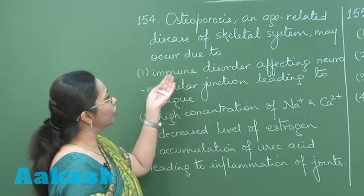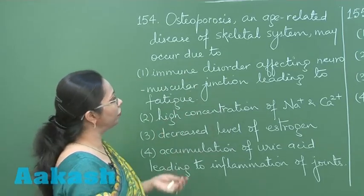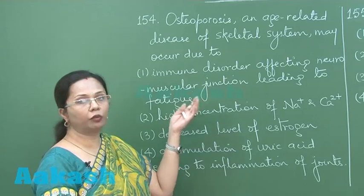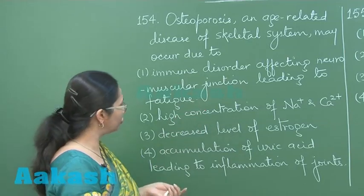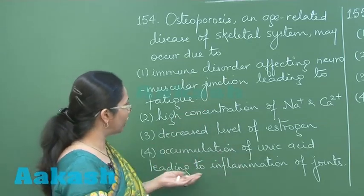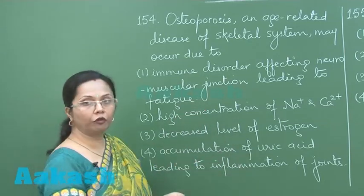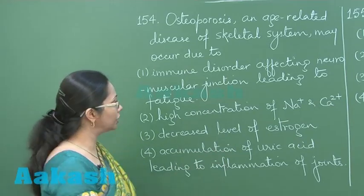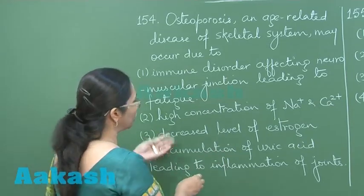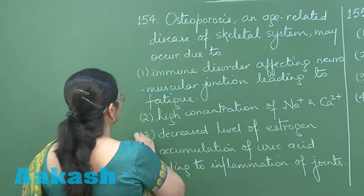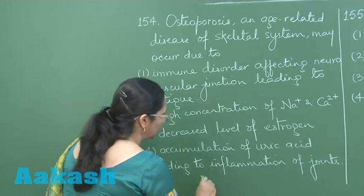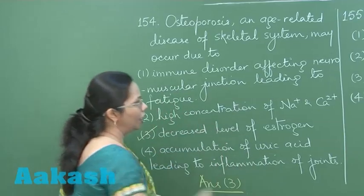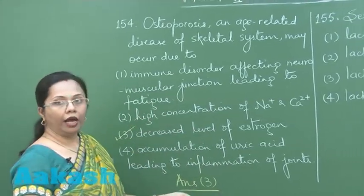The first choice — immune disorder affecting the neuromuscular junction leading to fatigue — is myasthenia gravis. Accumulation of uric acid leading to inflammation of joints is gouty arthritis. So the correct answer is option number 3.